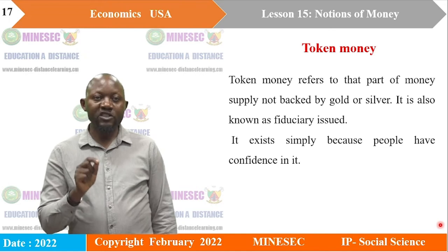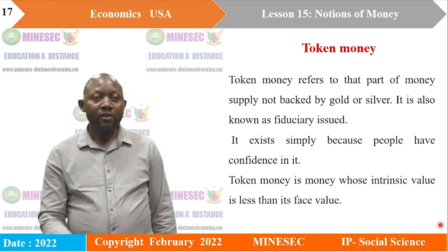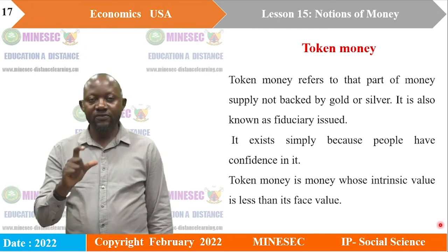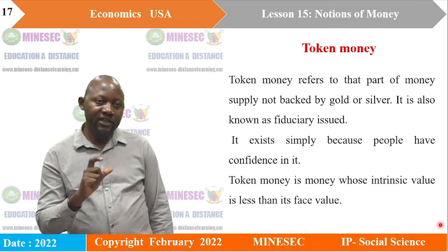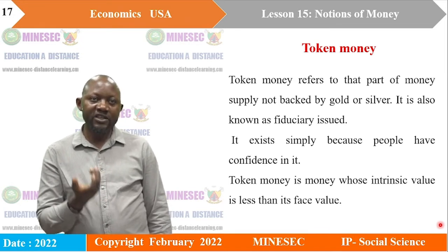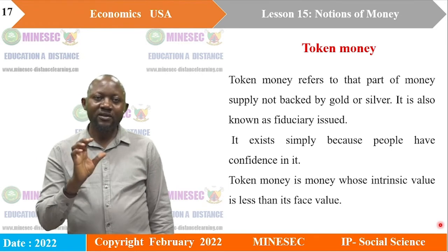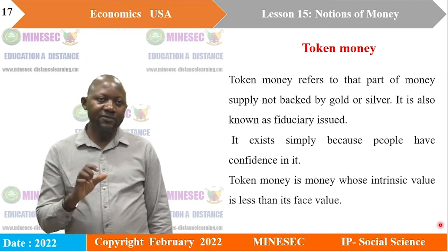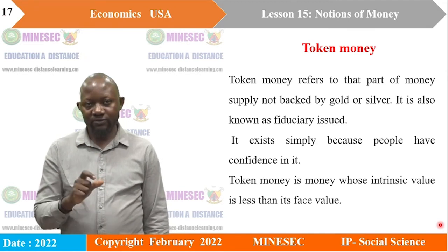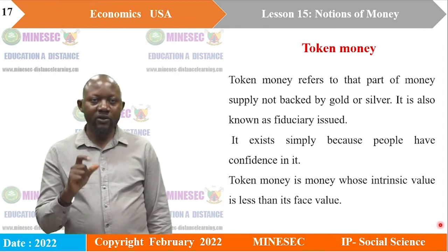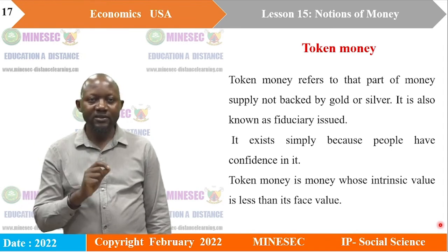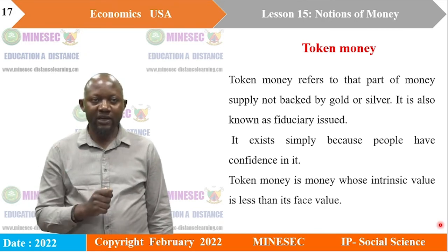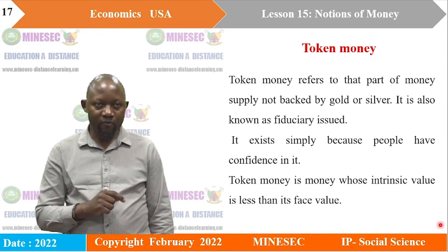Token money is money whose intrinsic value is less than its face value. Commodities were used because of their intrinsic value, but with token money the intrinsic value is far less than the face value. All modern forms of money are tokens. For instance, a token coin — the amount written on it is far more than the metal content. All paper money is not backed by gold and represents token money.